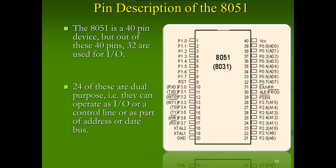The 8051 has 40 pins total. Out of these 40 pins, 32 are I/O ports. The remaining 8 are used for specific functions. Out of the 32 I/O pins, 24 are dual-purpose — they can operate as I/O ports, control lines, or as part of the address/data bus. There are four 8-bit ports: Port 0, Port 1, Port 2, and Port 3.